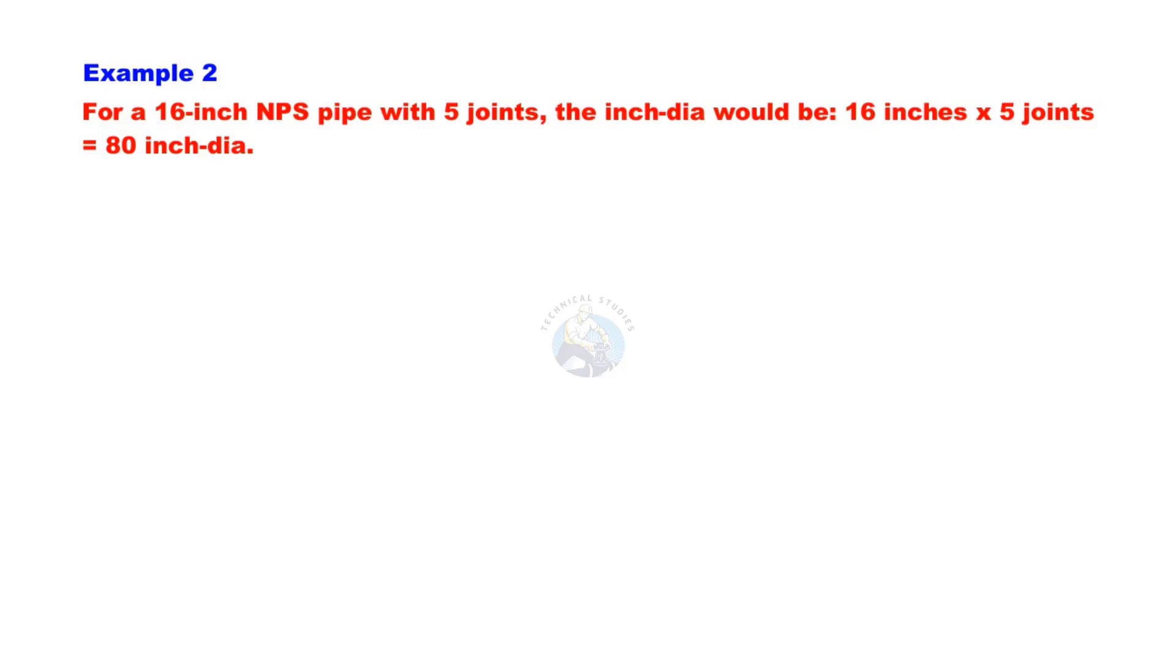For a 16-inch NPS pipe with 5 joints, the inch-dia would be 16 inches multiplied by 5, equal to 80 inch-dia.